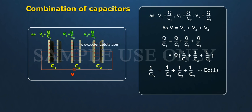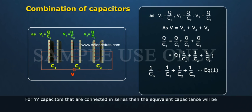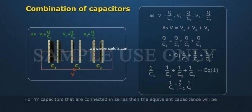From Equation 1, for N capacitors that are connected in series, then the equivalent capacitance will be 1 by Cs equals sum of 1 by Ci.